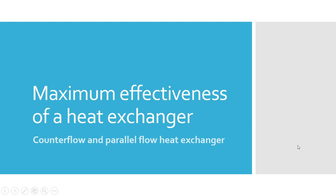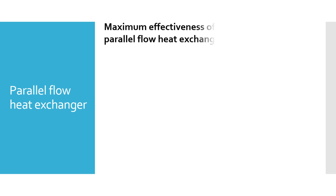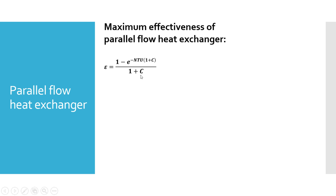In this video we will try to understand how to find out the maximum effectiveness of a heat exchanger. The first case we will consider will be for the parallel flow heat exchanger. We have already derived the expression for effectiveness in case of parallel flow heat exchanger: effectiveness epsilon is given by 1 minus e raised to minus NTU(1 plus C), divided by 1 plus C, where C is the capacity ratio.